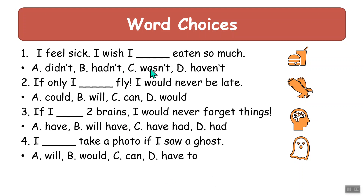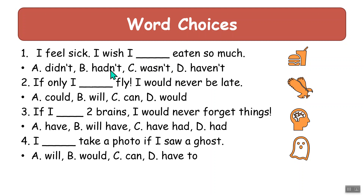Some more examples of multiple choice. 'I feel sick. I wish I ___ eaten so much.' With eaten, we can't put 'didn't' — so 'didn't eat' is wrong. 'Wasn't eaten' could be passive. 'Haven't eaten' is also possible. But it's not passive, so the correct answer is actually 'hadn't' — 'hadn't eaten' is correct.